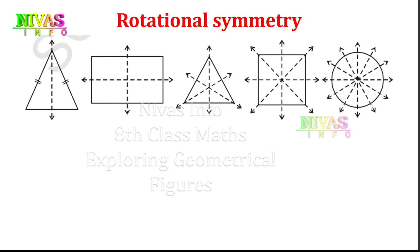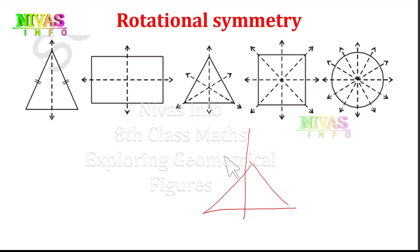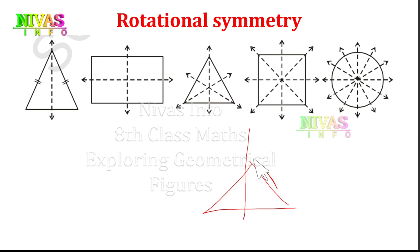For example, we apply the equilateral triangle. Here we have three lines. If you rotate, the base moves. If we compare, we have 60 degrees here — the rotation angle for an equilateral triangle.